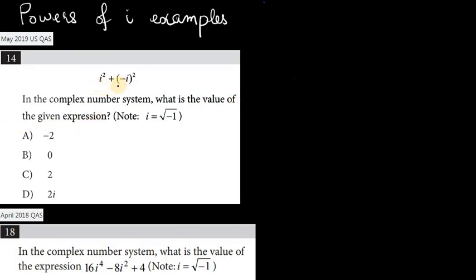i squared plus negative i squared. And in the last video, we learned that i squared is equal to negative 1.